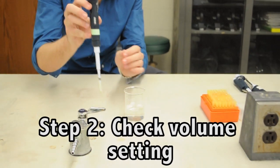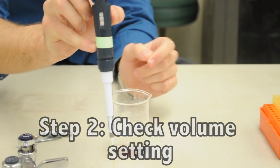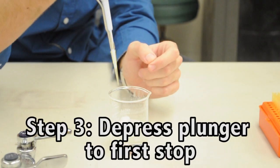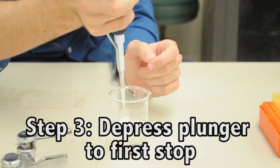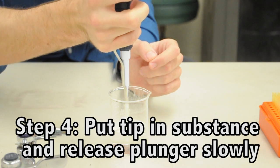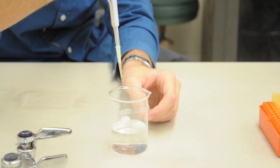You need to then check your volume setting. Right now we're using the P200 at a 100 setting so that will be 100 microliters. You depress the plunger to the first stop and then put the tip in the substance and release the plunger slowly to draw the liquid.